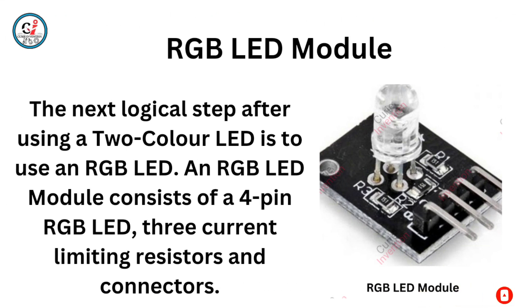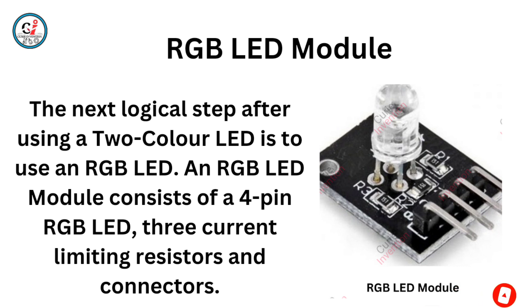RGB LED Module. The next logical step after using a two-color LED is to use an RGB LED. An RGB LED Module consists of a 4-pin RGB LED, three current-limiting resistors, and connectors.